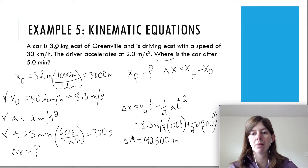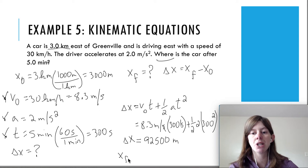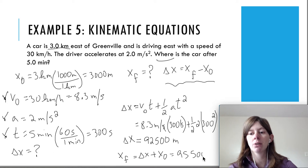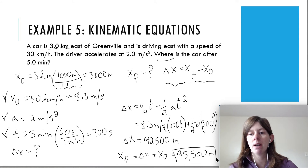Don't stop there — the problem asks for final position, not just displacement. So we add x initial to delta x: 92,500 + 3,000 = 95,500 meters. That's our final answer for the car's final position.